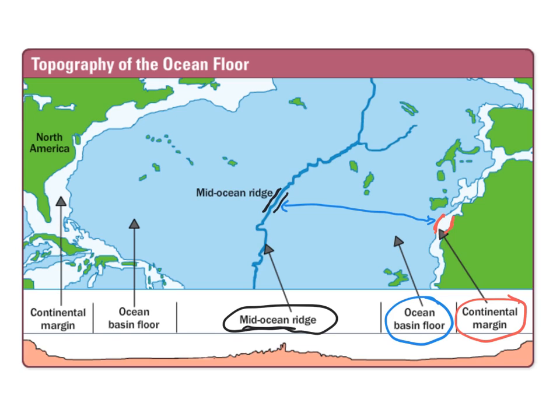If there were no mid-ocean ridge, the ocean basin floor could extend all the way across to the continental margin on the other side. We can kind of see that in our picture below, but we'll explore the continental margin in the next slide.